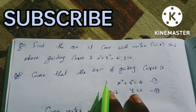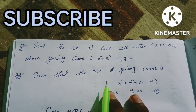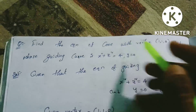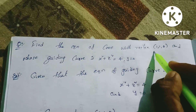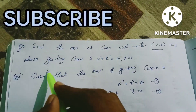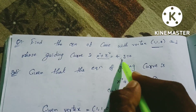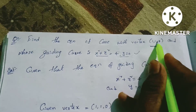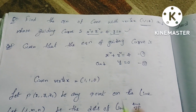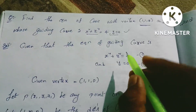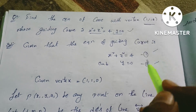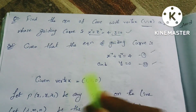In this video, we have a problem on the equation of the cone. Find the equation of the cone with vertex (1, 1, 0). We have the vertex and a guiding curve. We have two curve equations — equation 1 and equation 2 — along with the vertex.